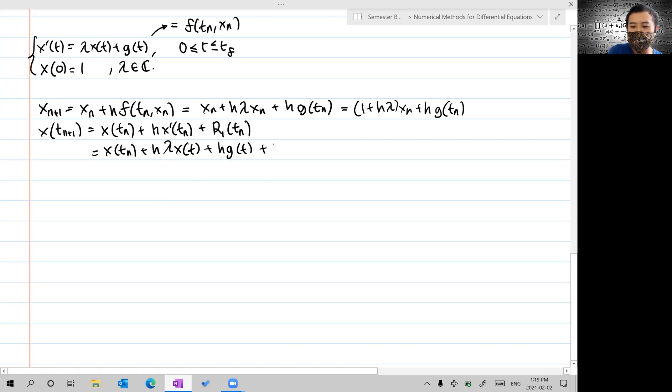For the sake of simplicity, we write this remainder term as τ_{n+1}. This is actually the local truncation error.